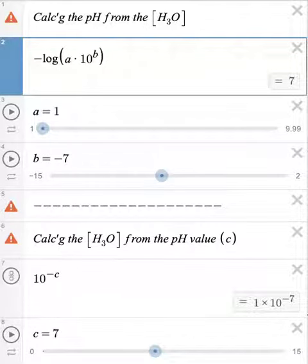You can use the Desmos pH Scale Calculator to calculate the pH of a solution or to calculate the hydronium ion concentration. It's easy to do.